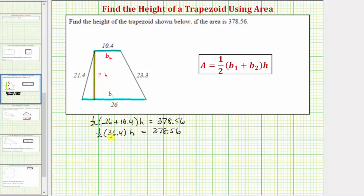One-half times 36.4 is equal to half of 36.4, which equals 18.2. Or we can write 36.4 as a fraction with a denominator of one. This would give us 36.4 divided by two times h equals 378.56.